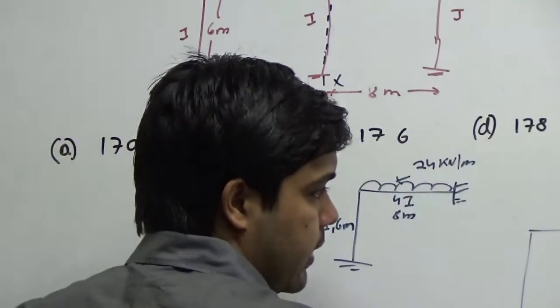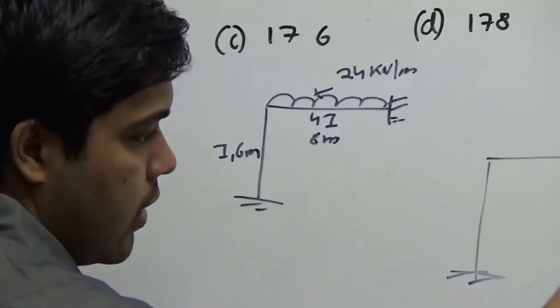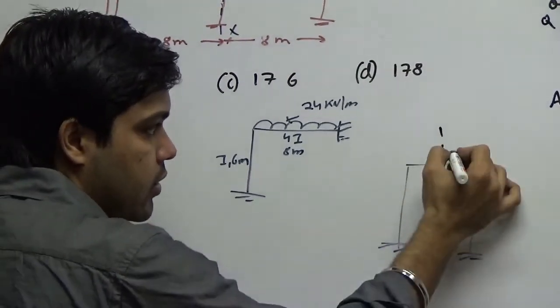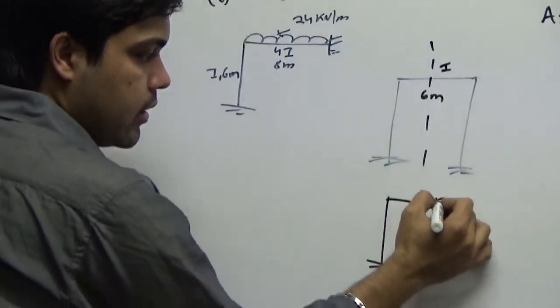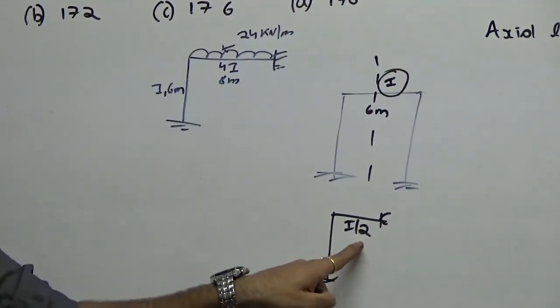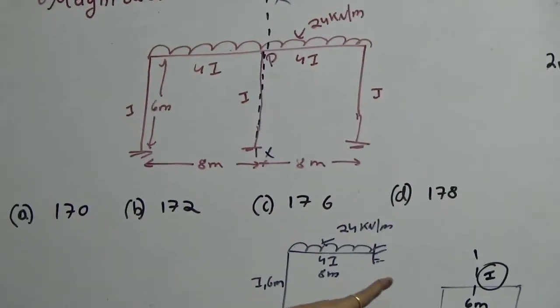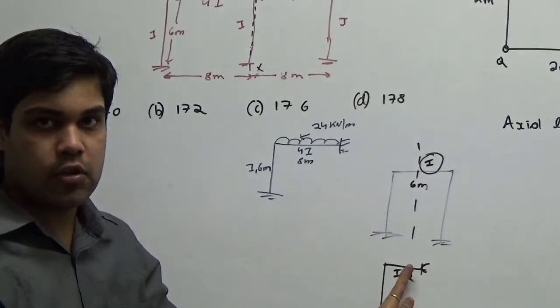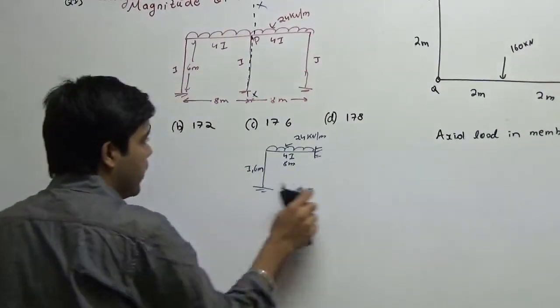If the column is like this - suppose the structure is like this. In this case if you want to apply the concept of symmetry and consider this was i and this was 6 meter, then you will consider like this and this i you will make it as i by 2. There is a long theory behind this but try to understand that whenever the axis of symmetry passes through the column you take the i as it is, whereas if the axis of symmetry is not passing through the column you have to take half the moment of inertia of the actual beam. Right now our axis of symmetry passes through the column so we are just interested in this.